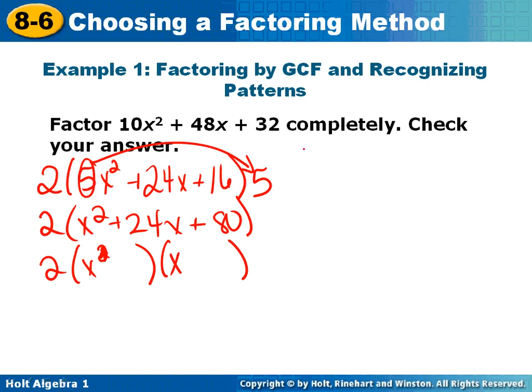Multiply to get 80 and add to get 24. It's not coming to me off the top of my head, so I'm going to make a little table. That would be 2 times 40. That doesn't work. 4 times 20. There we go. 4 times 20 multiplies to give me 80 and adds to give me 24. So that's going to be plus 4 and plus 20.